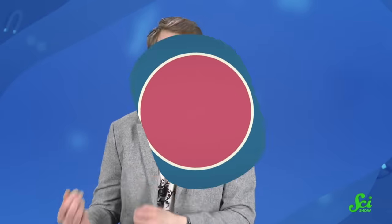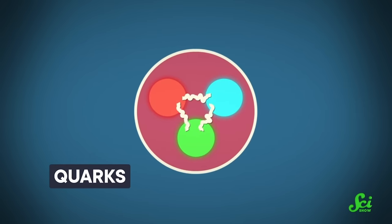Just like muons, antimuons are fundamental. They are as simple as a single subatomic particle can get. Meanwhile, an individual proton is complicated. It's not fundamental. Each one is made of smaller particles called quarks. So even if the simplest hydrogen atom only has one proton and one electron, muonium is even simpler.